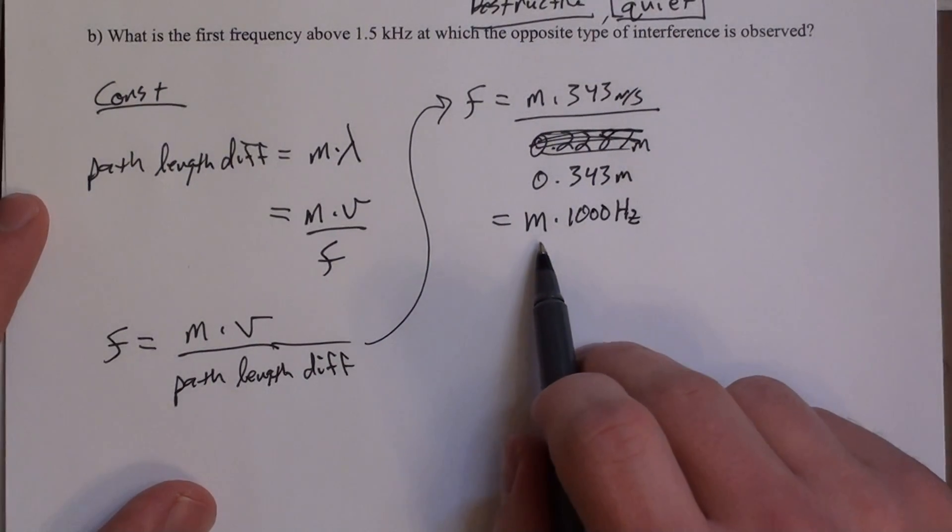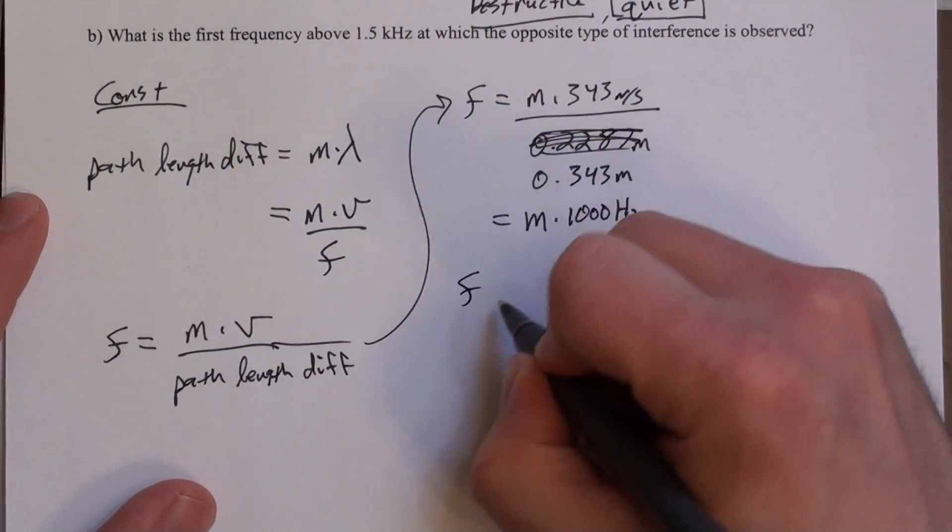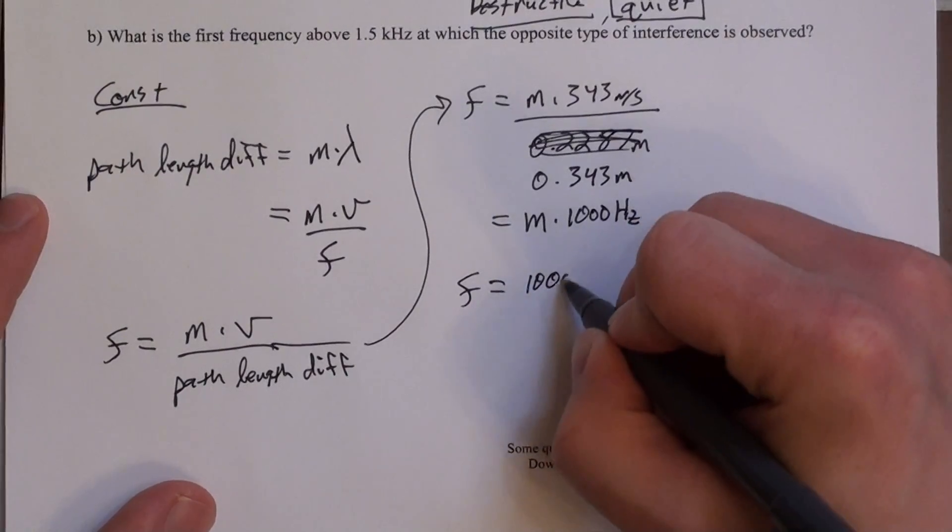We got this m here. m can be 0, it could be 1, it could be 2. 0 doesn't make a whole lot of sense here, but 1, 2, 3. So let's say this, f could equal 1,000 hertz, 2,000 hertz, 3,000 hertz, and so forth.